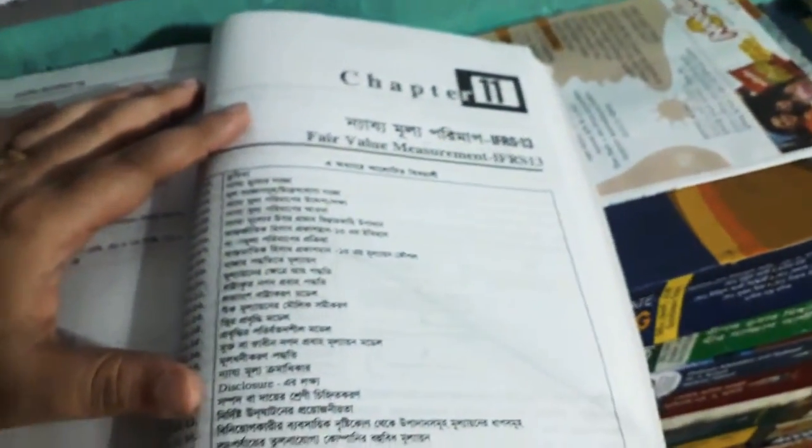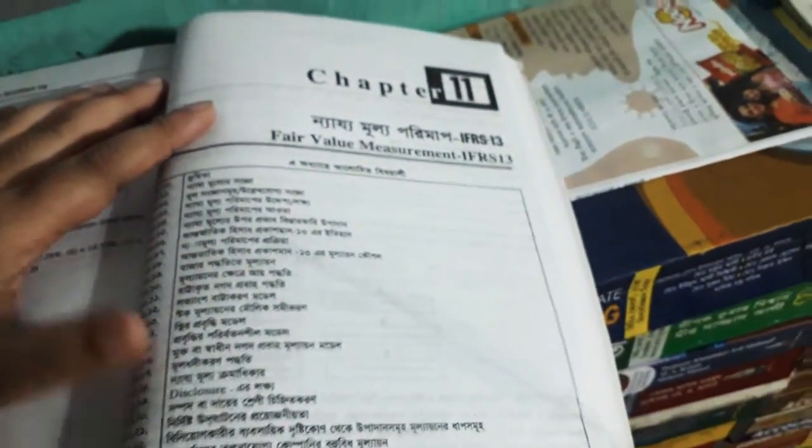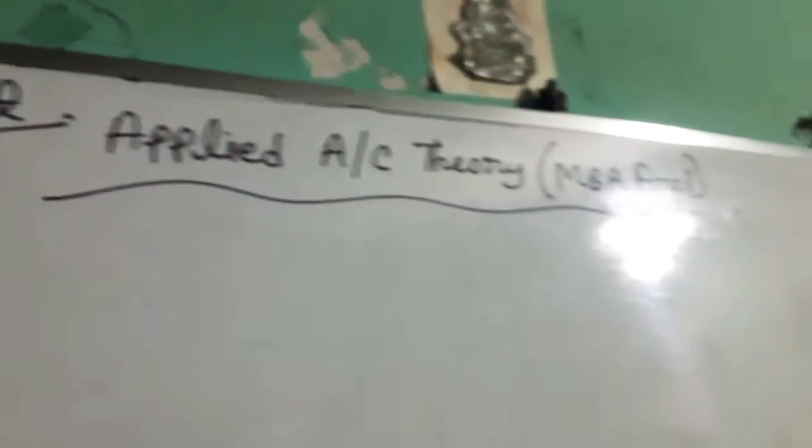We have started our first class. It is complicated to run into our first class, so this is what we are doing now. We have started our subject called Applied Accounting Theory.